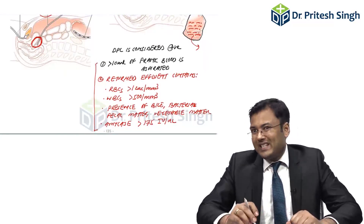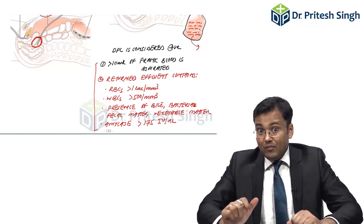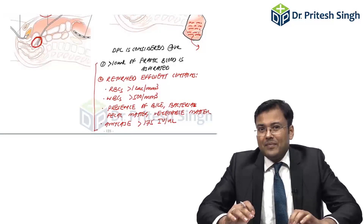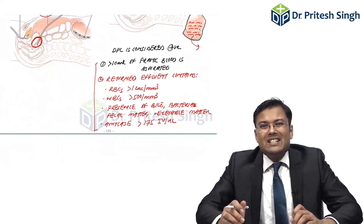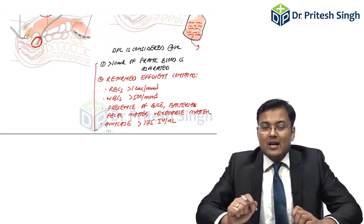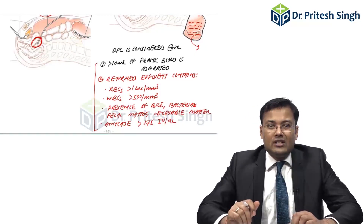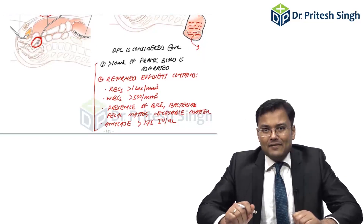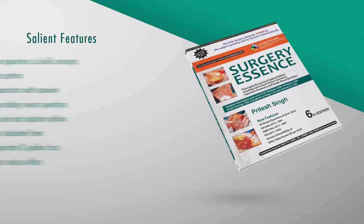Whenever FAST is positive and the patient is stable, we have sufficient time to perform CCT to assess the specific injury. Since CCT is the gold standard investigation for diagnosis in stable patients of blunt trauma abdomen, it must be performed after FAST in stable patients.